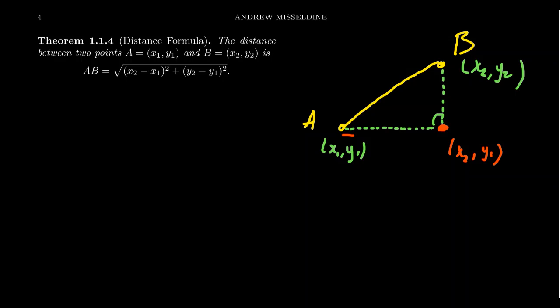So if we measure the distance between here and here, because it's completely horizontal, the distance there is just going to be x2 minus x1. Then if we measure the distance from this red point up the vertical line to the yellow point, since the x-coordinate is the same, we'll just take the difference of the y-coordinate so we get y2 minus y1.